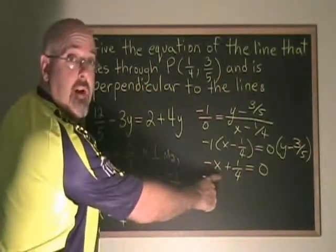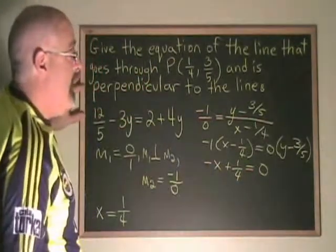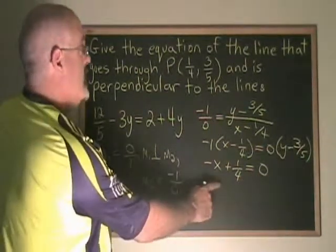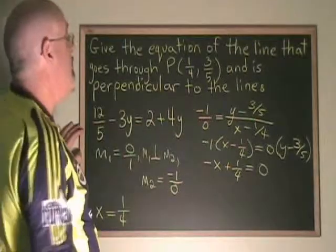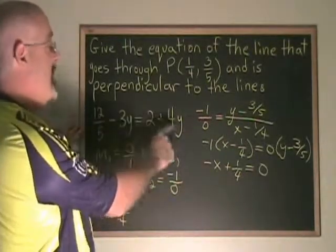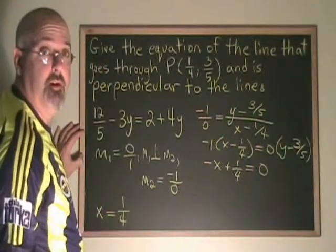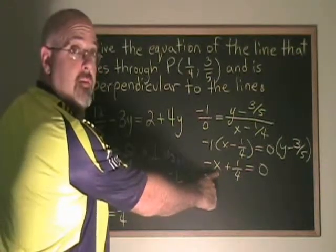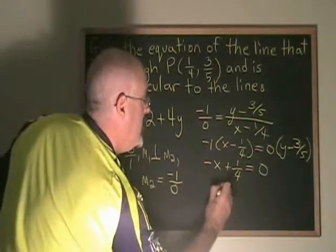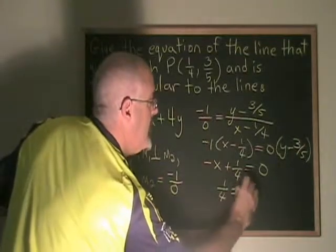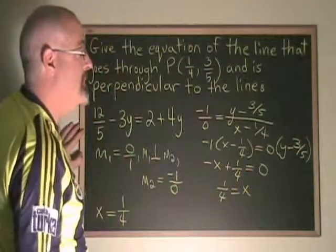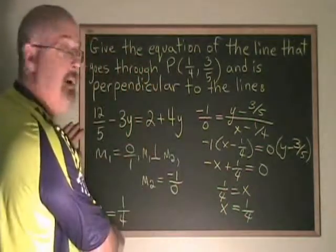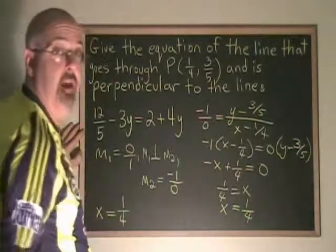This is the right answer in standard form. And this answer cannot be given in slope-intercept form. So therefore, the equation of the line that goes through the point 1 quarter, 3 fifths and is perpendicular to this line is negative x plus 1 quarter equals 0. This equation is in standard form, but we can rewrite it as 1 quarter equals x, or we can write this as x equals 1 quarter. It's the same answer, but we now have found a way to justify that answer.